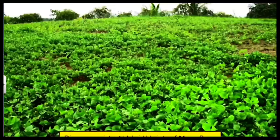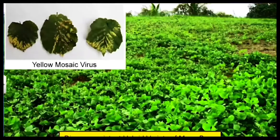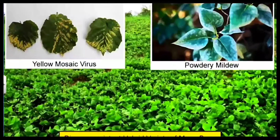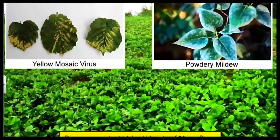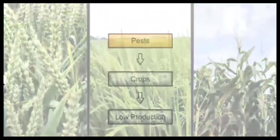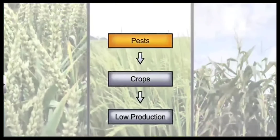For example, a variety of moong bean was developed which was resistant to yellow mosaic virus as well as powdery mildew. In the next section we will be studying about pest resistance.